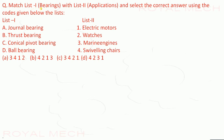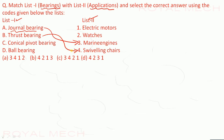Match list 1 bearings with list 2 applications. Journal bearing is used in marine engineering. Thrust bearing is used in swiveling chairs. Conical pivot bearing is used in watches. Ball bearing is used in electric motors. The correct match is 3-4-2-1, therefore option C is the correct option.